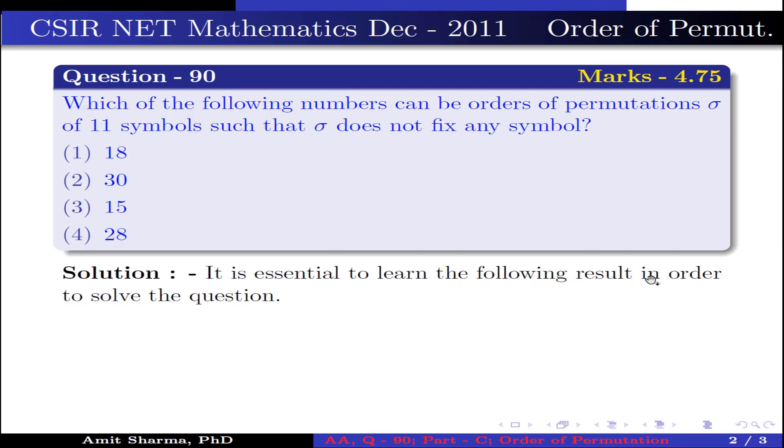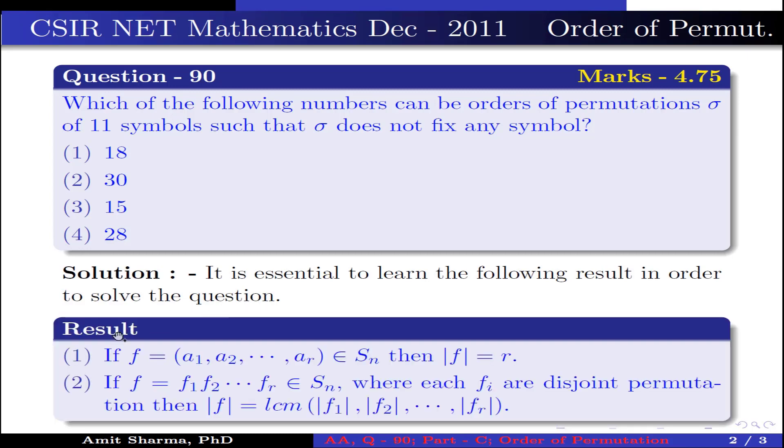It is essential to learn the following result in order to solve the question. Point number one: if the permutation f = (a1, a2, ..., ar) belongs to Sn, then order of f is equal to r, means f is an r-cycle permutation.